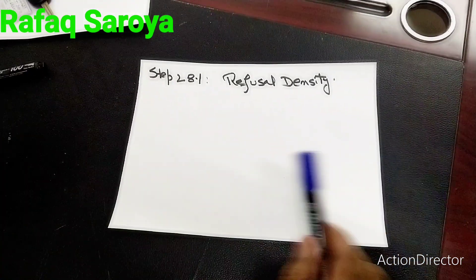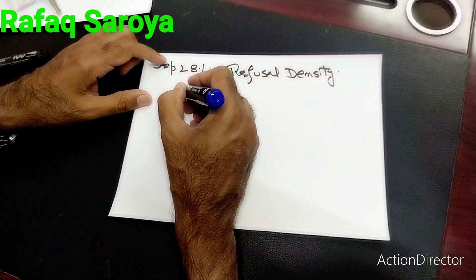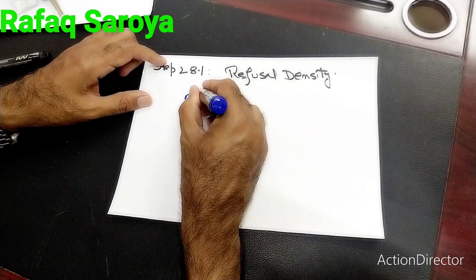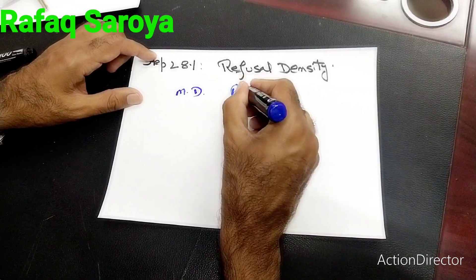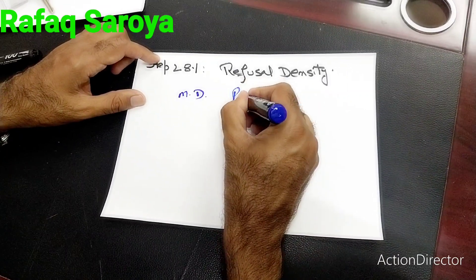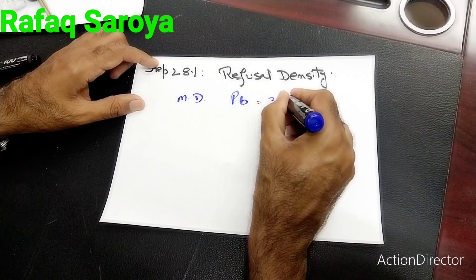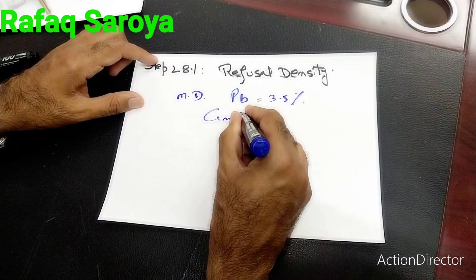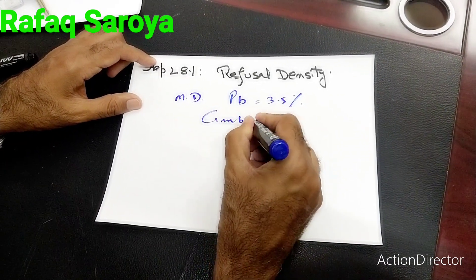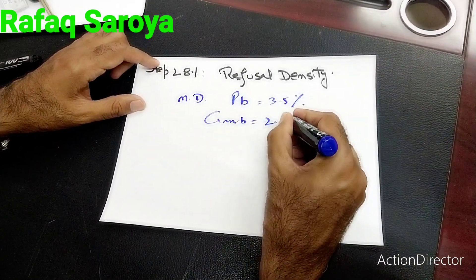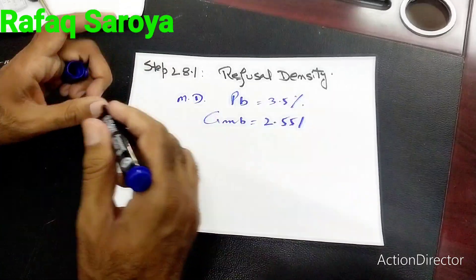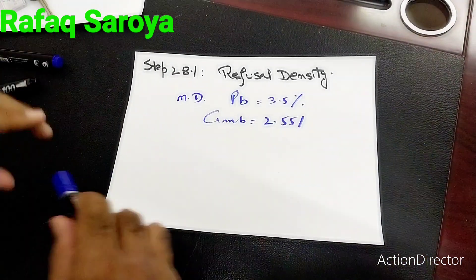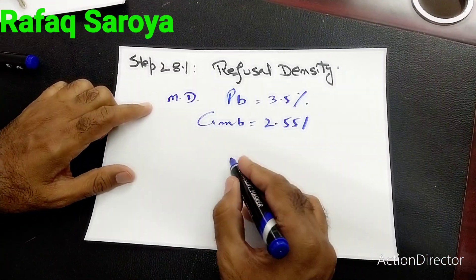Before I start explaining further, let me tell you one thing. We have developed a mix design where the bitumen content is 3.5% and where our GMB value is 2.551.